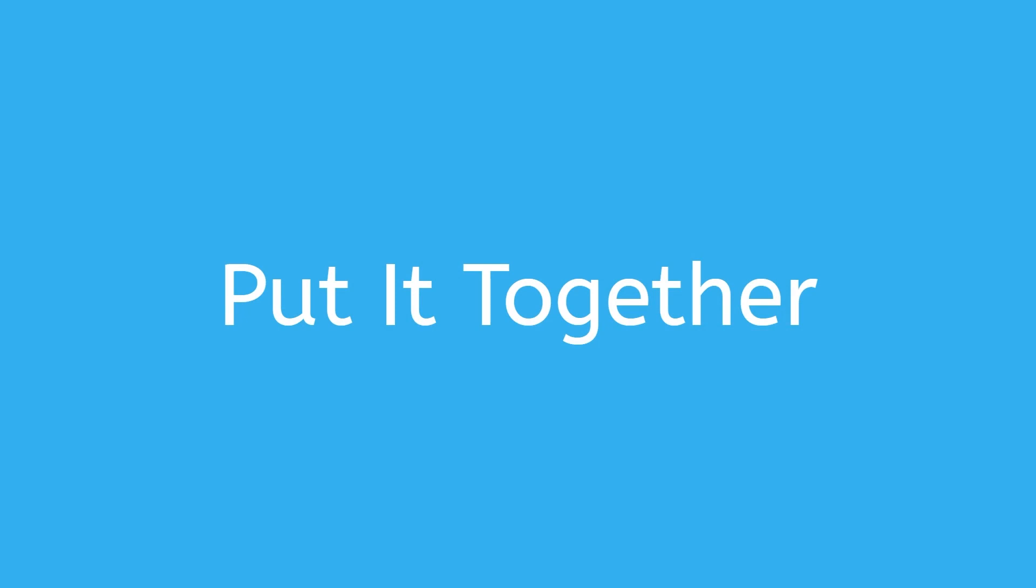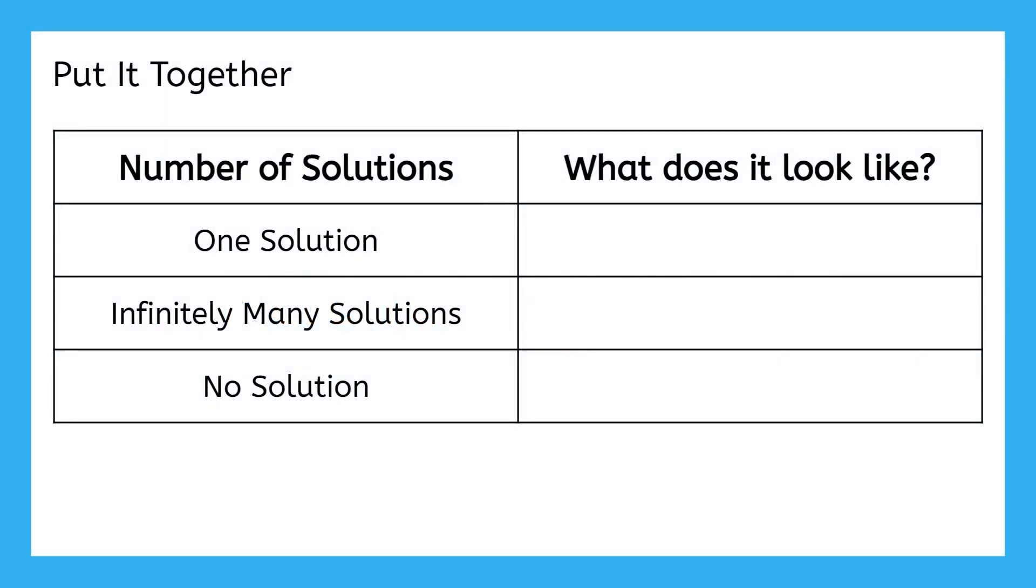Let's put all of that new information together and summarize it so that we can put it to good use. In this lesson, we are talking about three possible numbers of solutions for equations. Those three outcomes are one solution, infinitely many solutions, or no solution. If you try to solve an equation, what will it look like to signal to you that it has one solution, infinitely many solutions, or no solution? One solution is what we've been dealing with all along, so we know what that looks like. Your variable equals some number. What will these two new scenarios look like? Pause the video here and try to fill in these last two rows now.